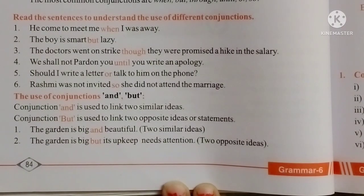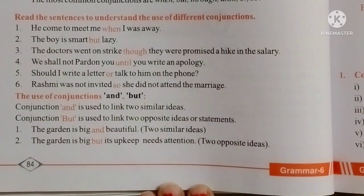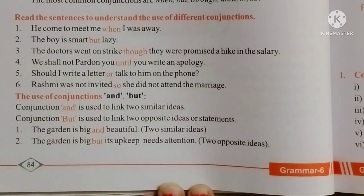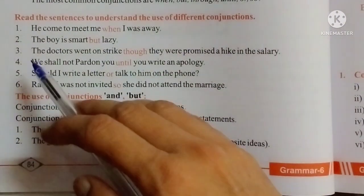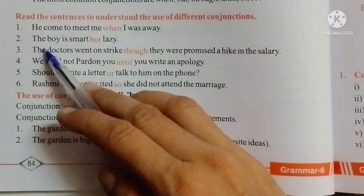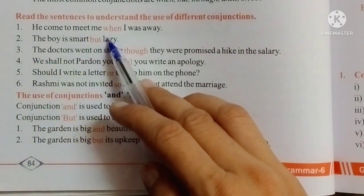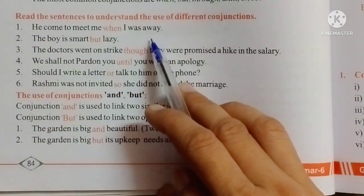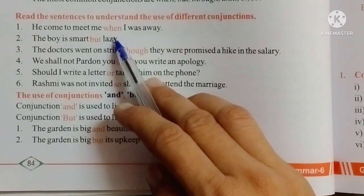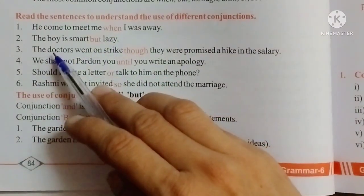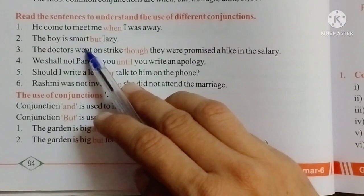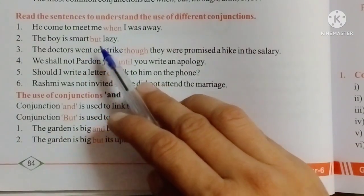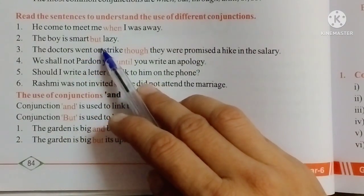Read the following sentence and use different conjunctions. He came to meet me when I was awake. In this sentence, 'when' is a Conjunction. The boy is smart but lazy — 'but' is a Conjunction.